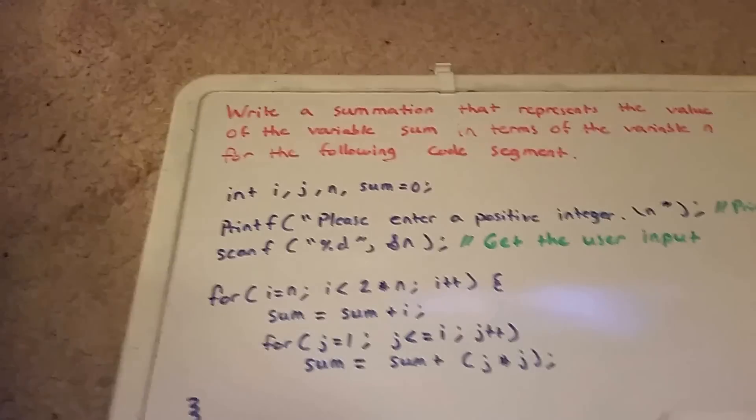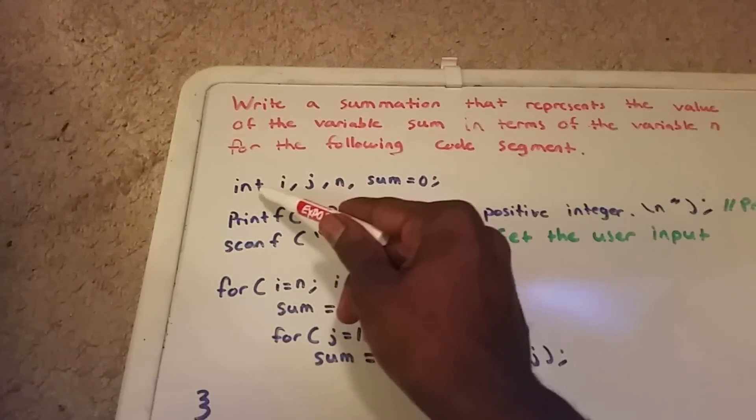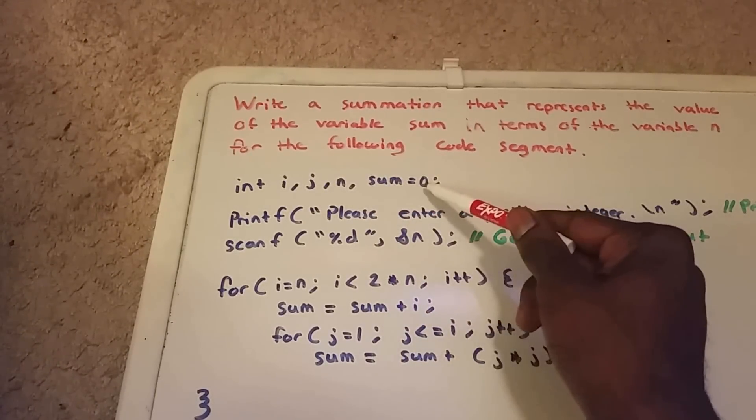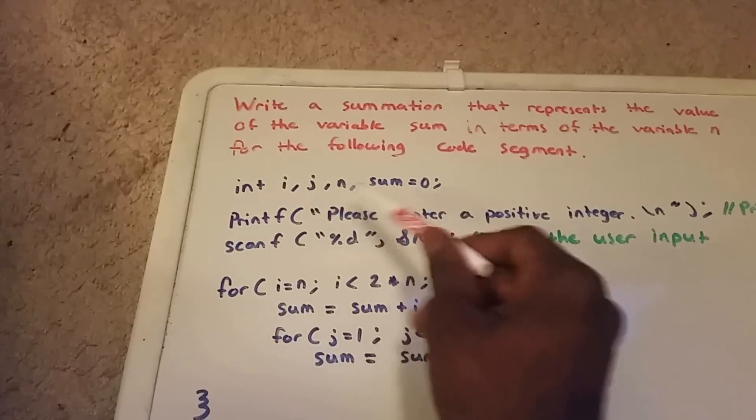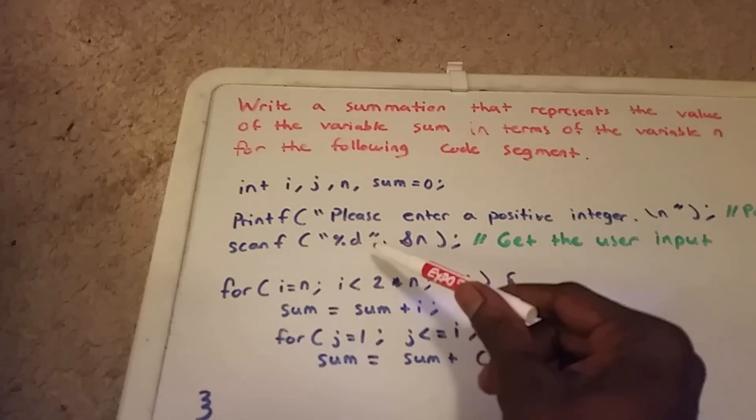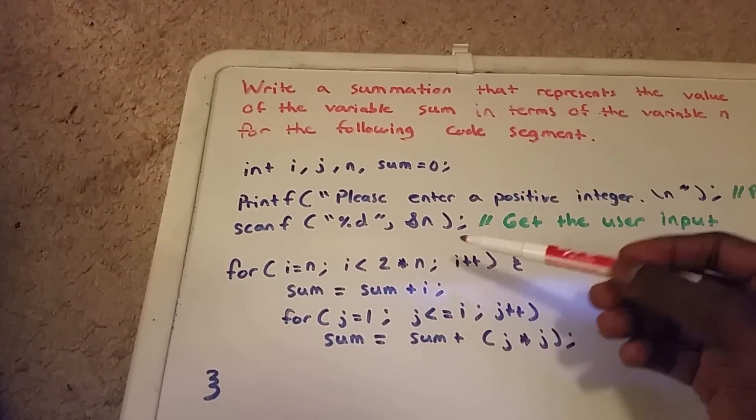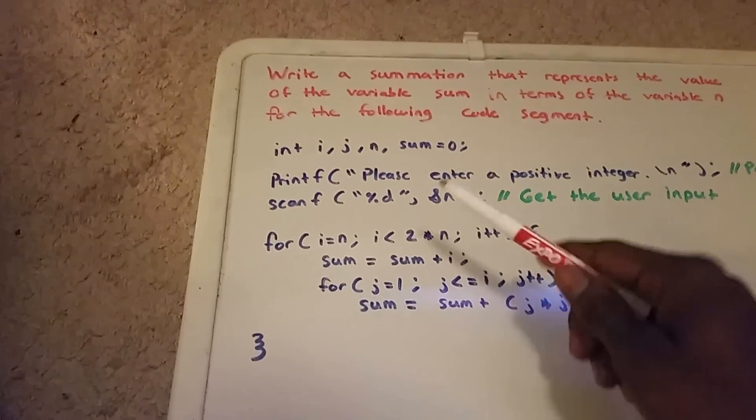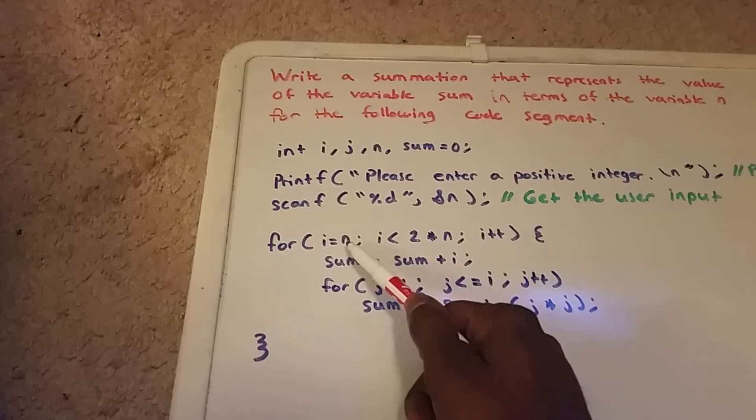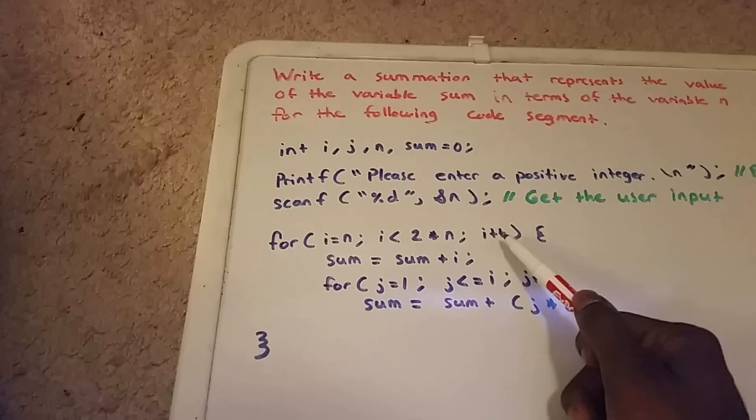Here we have the code segment in blue with our integer variables i, j, n, and sum, and we set sum equal to zero. Then we have a print statement that says please enter a positive integer, and we get that user input through the scanf function. Then we have two for loops, and within the first for loop it goes from i equaling n to i less than two times n, and i increases by one each time.